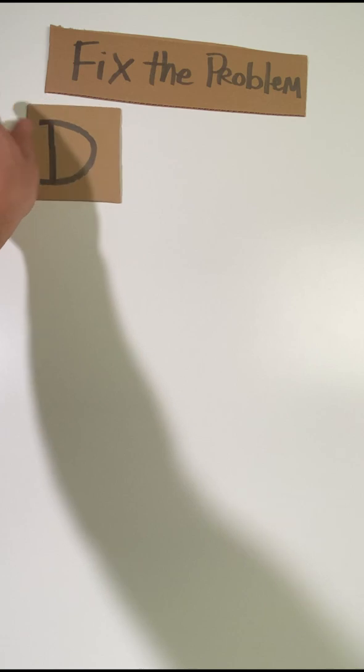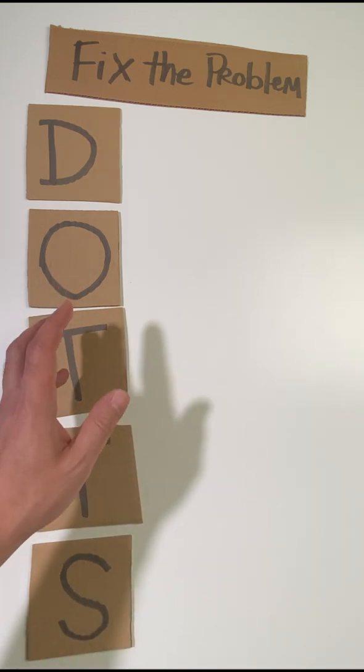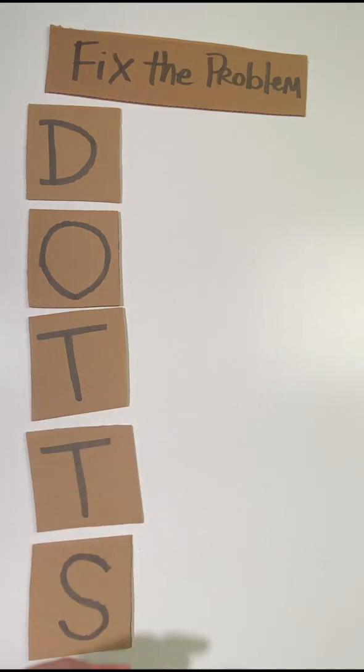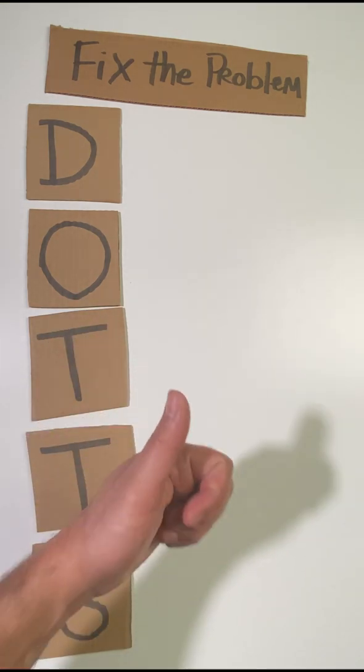Once you've gone through the differential of what the cause of the problems can be, it's time to go through and fix the problem. And for that we're going to use the mnemonic DOTS. Now it's very important, even if you figure out what the problem is on one of the initial steps, go through to the end of the algorithm. This is going to be a really good check on your system to make sure everything is A-okay.